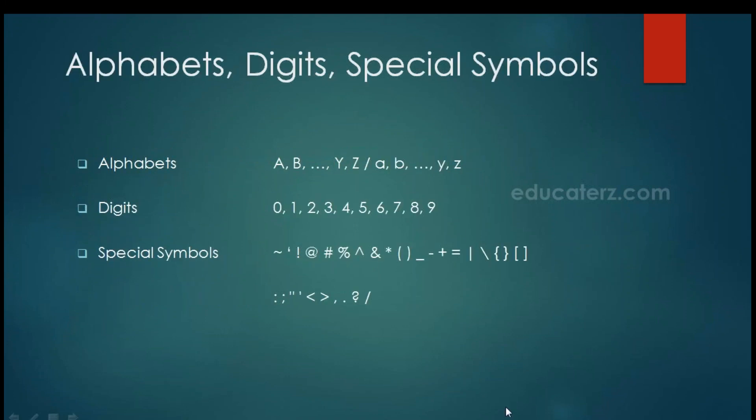These are the alphabets, digits, and special symbols which we can use in C programming. Alphabets include capital A to Z as well as small case a to z. Digits include 0 to 9.